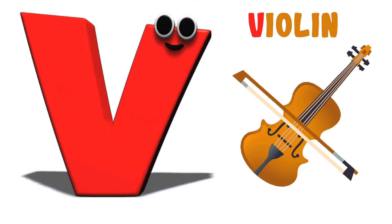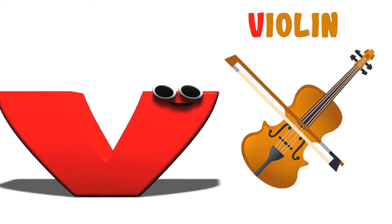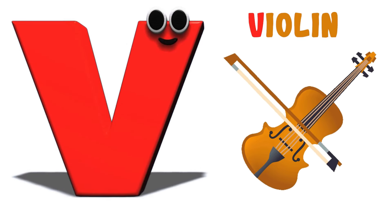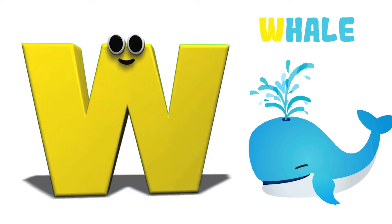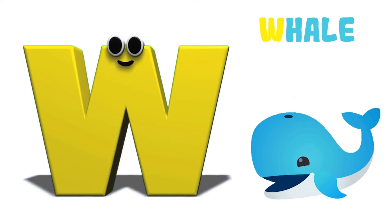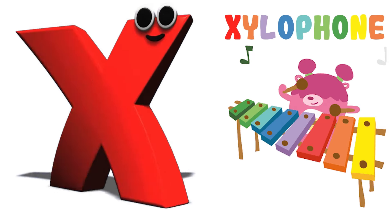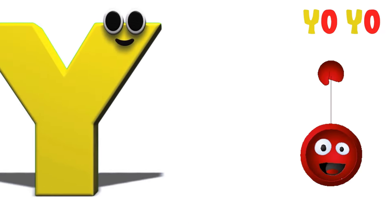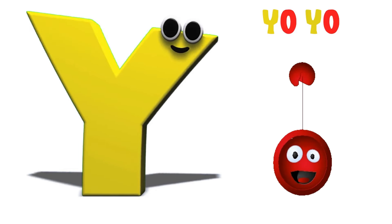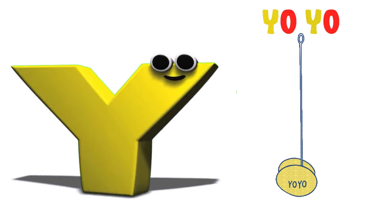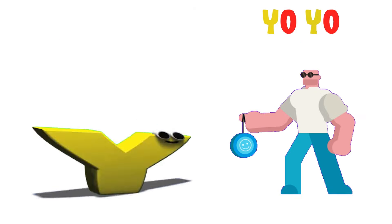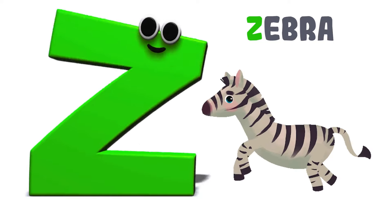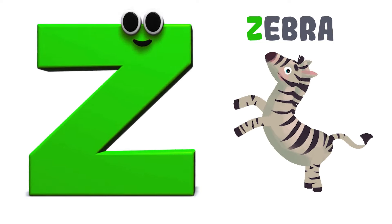V is for Violin. V-Violin, V-Violin. W is for Whale. W-Whale, W-Whale. X is for Xylophone. X-Xylophone, Xylophone. Y is for Yo-Yo. Y-Yo-Yo, Y-Yo-Yo. Z is for Zebra. Z-Zebra, Z-Zebra. Do it again!